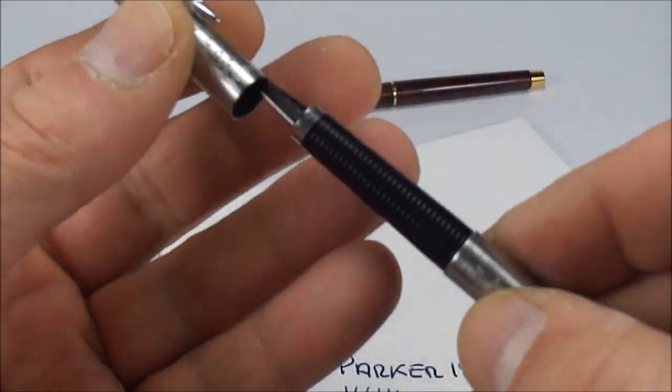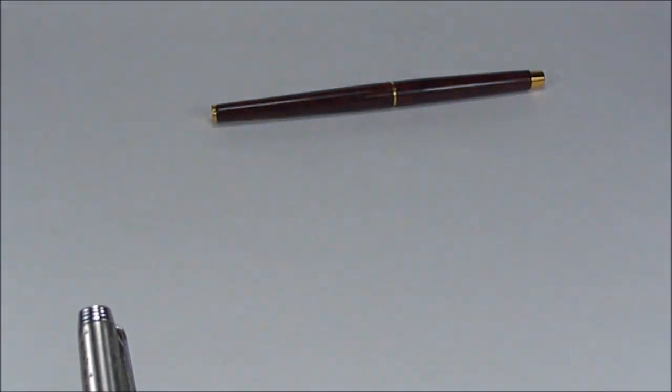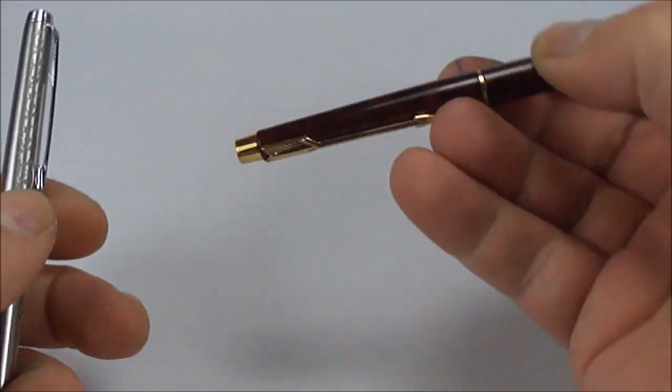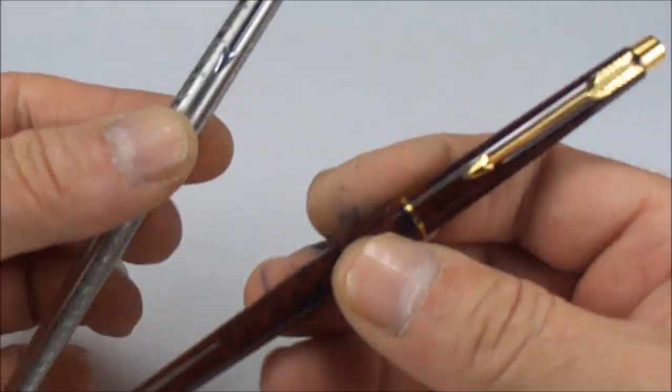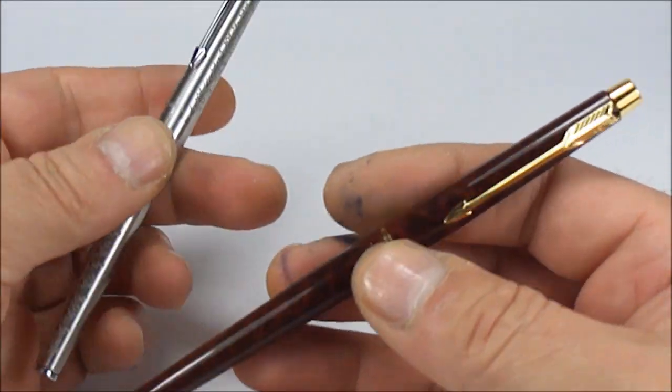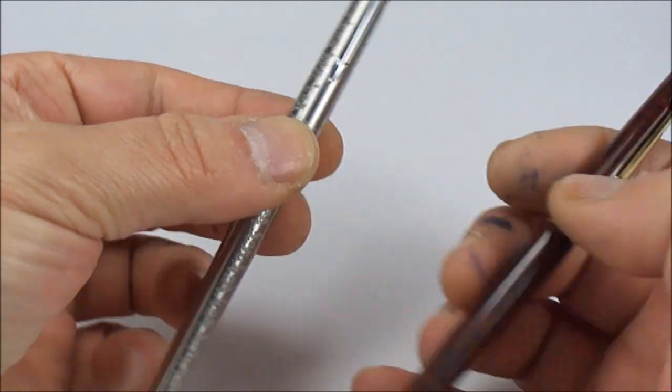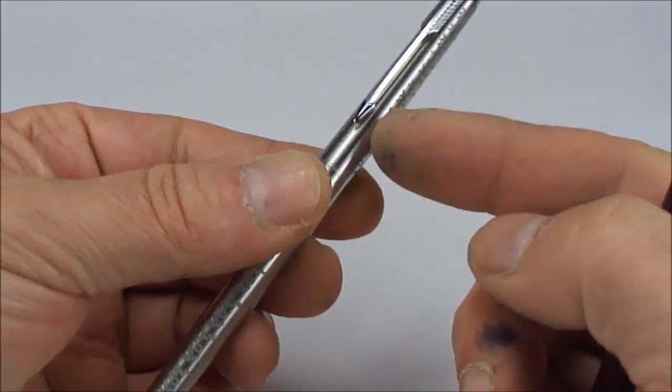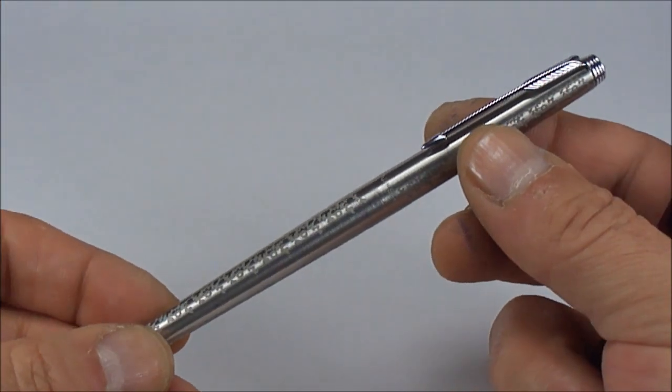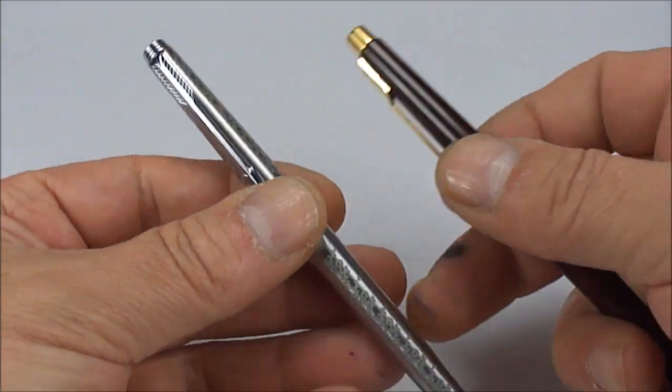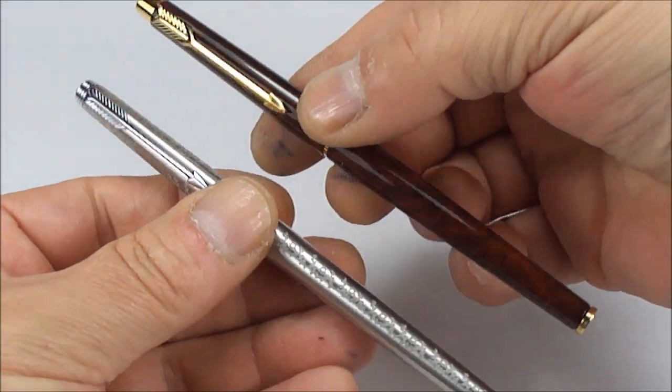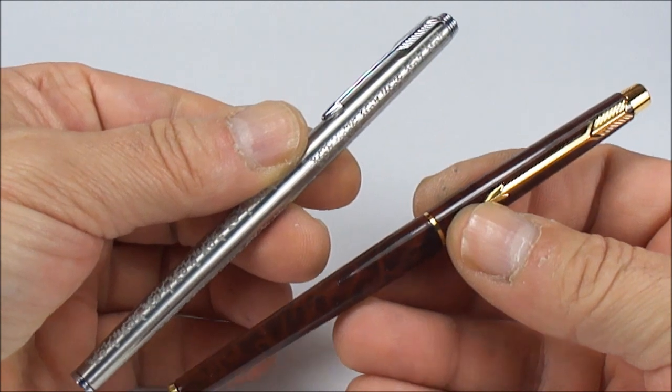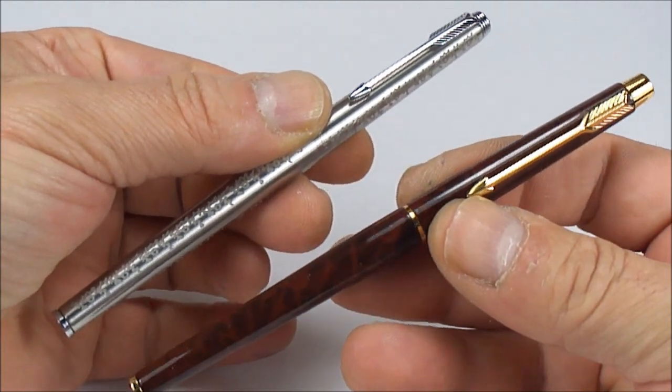That's the Parker 180. We won't show the Parker Classic writing because it writes like a standard normal nib. I wanted to show you what they mean by the 180 having one nib with two writing angles.